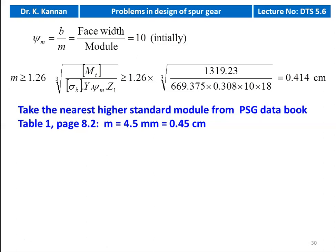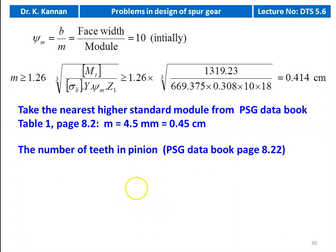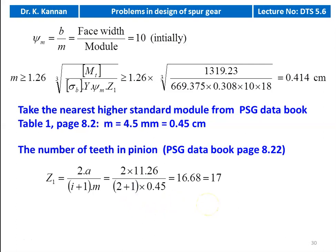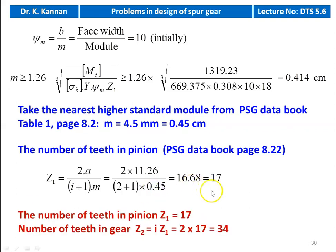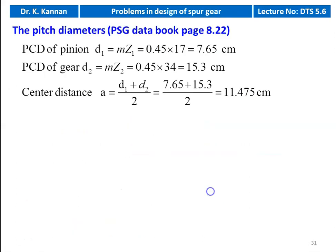We calculate the number of teeth on the pinion: Z1 = 2A / [(I + 1) × M] = 2 × 11.26 / [(2 + 1) × 0.45] = 16.68, so we take Z1 = 17. Number of teeth on the gear: Z2 = I × Z1 = 2 × 17 = 34. We calculate the pitch circle diameter. The equations are available on page number 8.22.